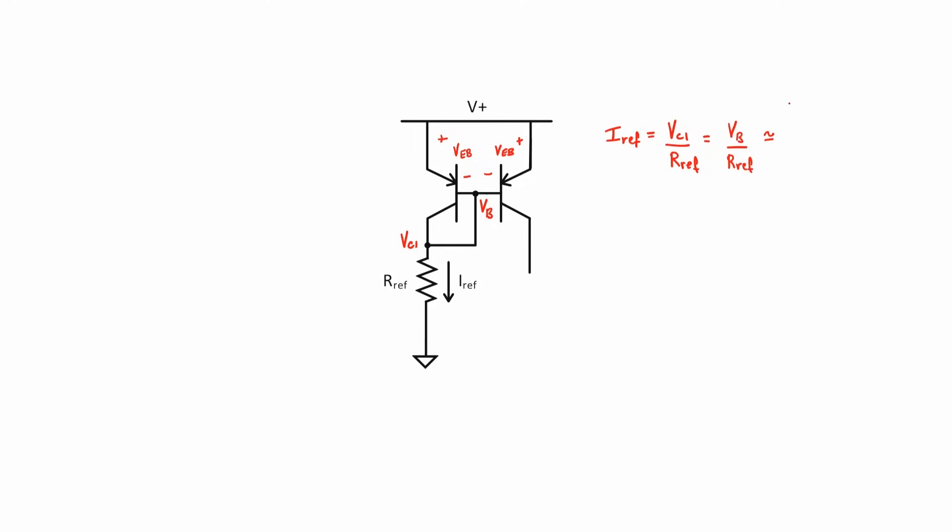Furthermore, we know our base voltage is going to be roughly 0.7 volts below our power supply voltage. We can thus use the reference resistor to program the reference current. Because the two emitter base voltage drops are the same in both transistors, then the current flowing through the collector of transistor 2 should be almost the same as the reference current flowing through transistor 1.